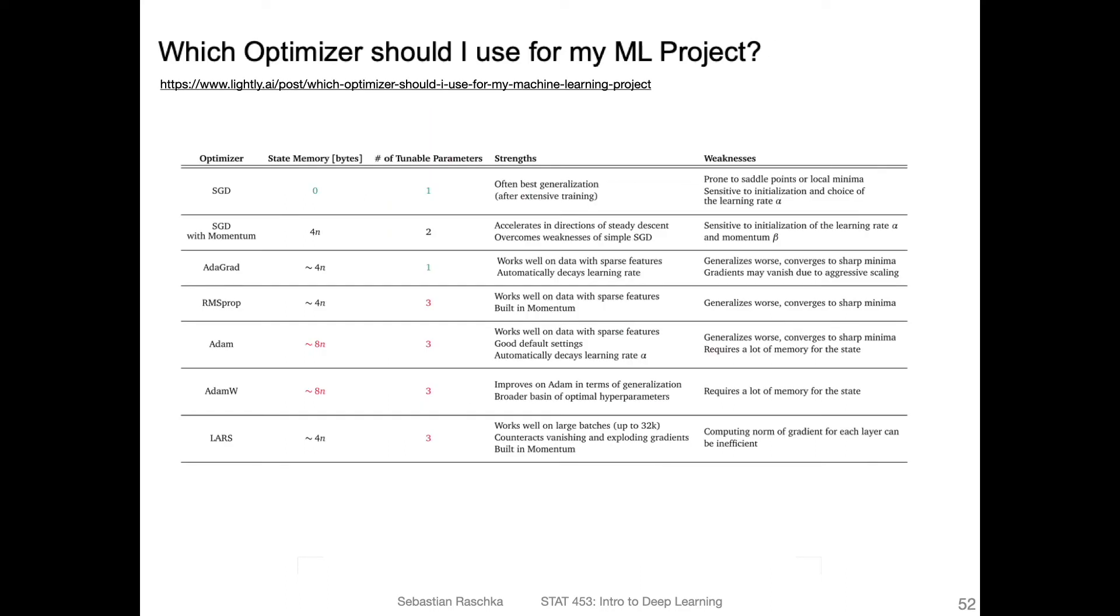Here's a blog article also listing all the strengths and weaknesses of these different algorithms, taking an objective view. They didn't develop a particular method, because usually when you read a paper where people propose a new method, the new method is of course better than the previous methods. But here, this is someone just summarizing these different methods and coming up with some takeaways. In terms of the state memory, how much memory that requires in addition on your GPU, and the hyperparameters that you need to tune.